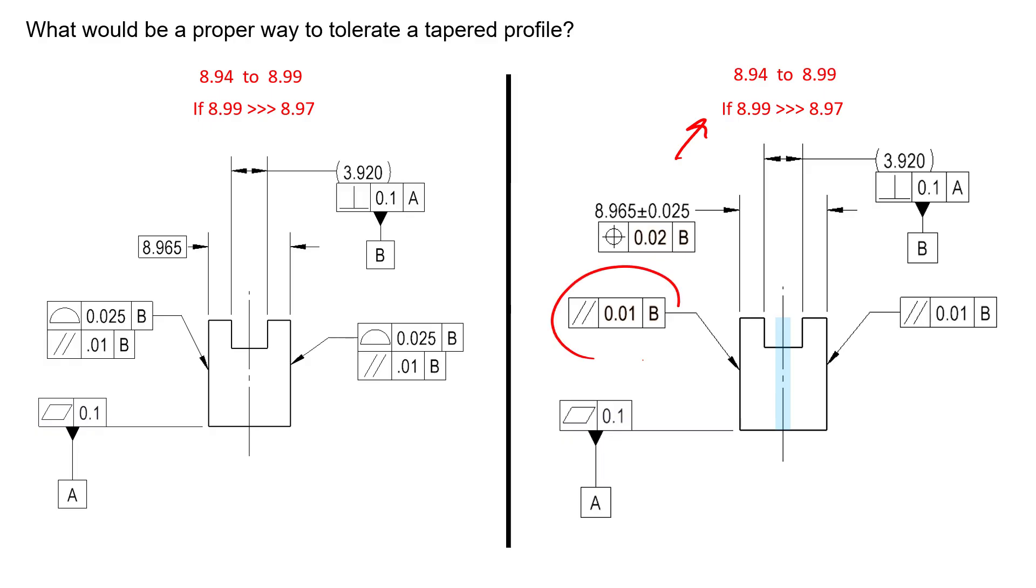We're making sure we don't taper all the way down to 8.94 if the top measures at 8.99. To do this, we're going to refine the orientation of each one of these surfaces separately. We still get a large size, but if the top measures at 8.99, we can only allow 10 microns of horizontal deviation with respect to datum B.